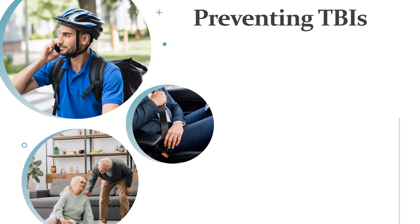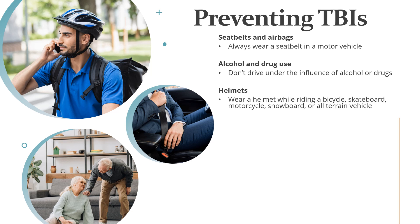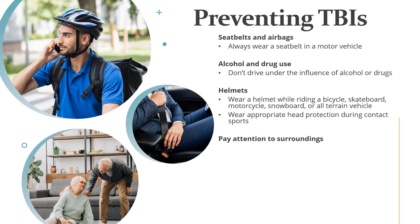To prevent TBIs, always wear a seat belt in a motor vehicle, don't drive under the influence of alcohol or drugs, wear a helmet while riding a bicycle, skateboard, motorcycle, snowboard, or all-terrain vehicle, and wear appropriate head protection during contact sports. Pay attention to surroundings and don't drive, walk, or cross the street while distracted.